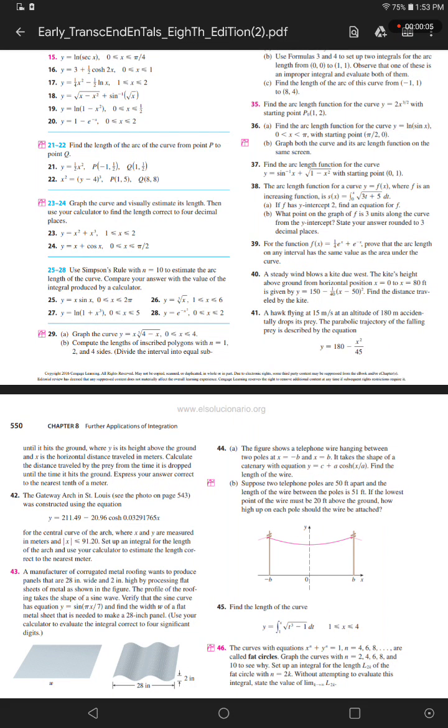Number 35. Find the arc length function for the curve y equals 2x to the power of 3 over 2, with a starting point (1, 2).